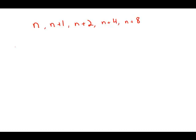Well, first of all, remember that the median is the middle of the list when they're written in order. They're already written in order, so the middle number on the list is simply n plus 2. That's pretty easy.